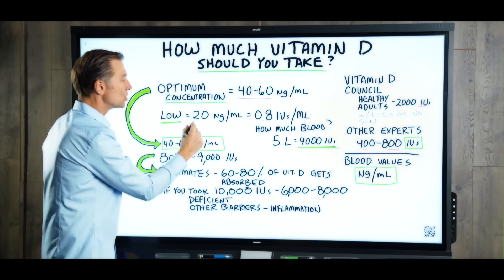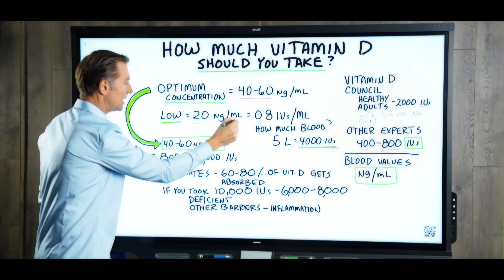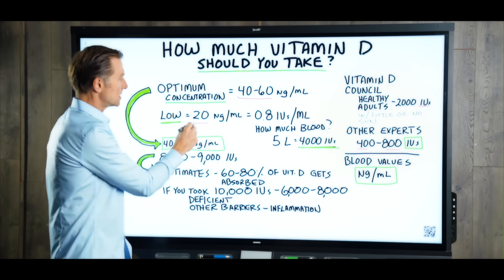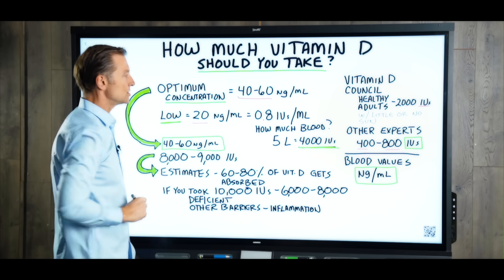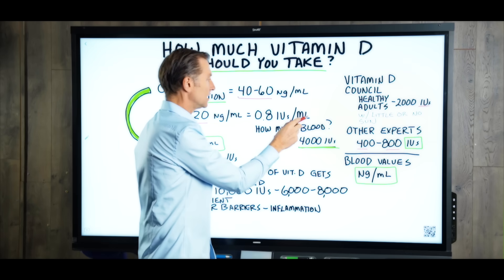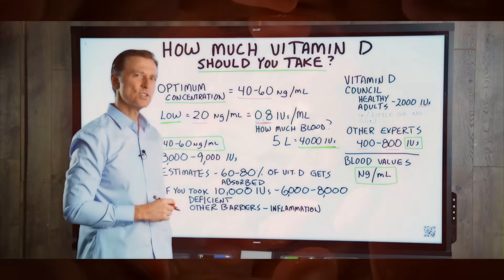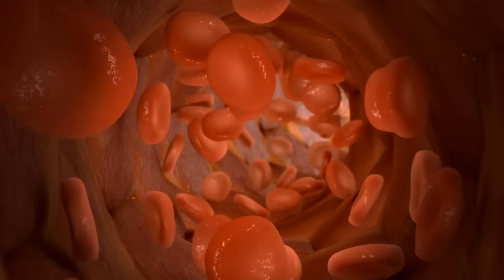So if you had 20 NGs per milliliter, that would be considered low, right? Well, let's convert 20 NGs per milliliter to international units per milliliter. It would be 0.8. Pretty small. But the question is, how much blood do we have? Because this is per milliliter, not all of your blood.